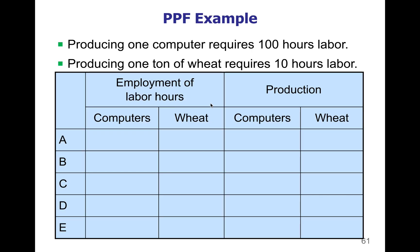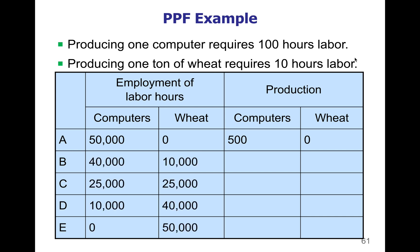The data tells us: to produce one computer requires 100 labor hours, and to produce one ton of wheat requires 10 labor hours. If you use all 50,000 labor hours for computers and make no wheat, this country can make 500 computers. You can also divide labor hours to get various combinations of wheat and computers, or use all 50,000 labor hours to make wheat and get 5,000 tons of wheat but no computers.